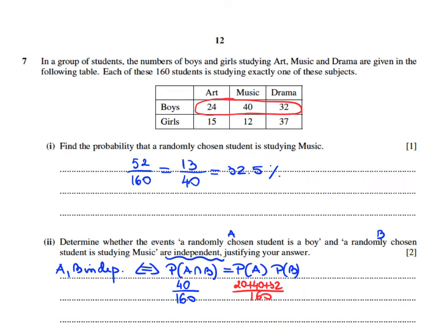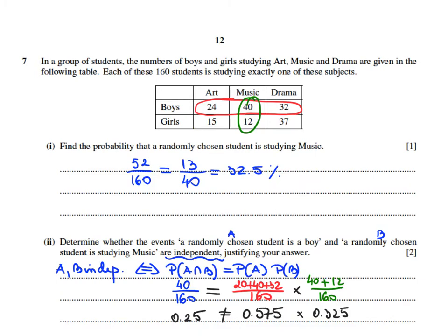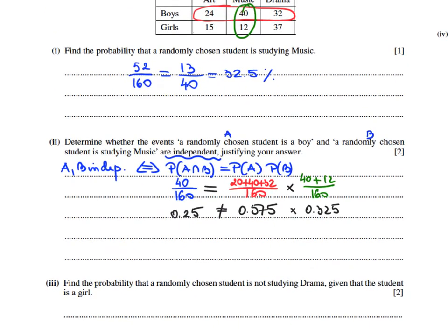Event B is that the student is studying music. The students studying music give us 40 plus 12 out of 160. We now check if the relation P(A and B) = P(A) × P(B) holds. When I calculate all these probabilities, the left-hand side is not the same as the right-hand side. Therefore, the conclusion is that A and B are not independent.